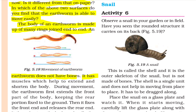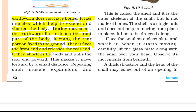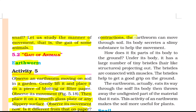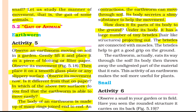The body of an earthworm is made up of many rings joined end to end. An earthworm does not have bones. It has muscles which help to extend and shorten the body. During movement, the earthworm first extends the front part of the body, keeping the rear portions fixed on the ground, then shortens the body and pulls the rear end forward. Repeating such muscle expansions and contractions, the earthworm can move through soil. The body secretes a slimy substance to help movement. Under its body, there are tiny bristles connected with muscles that give a good grip on the ground.